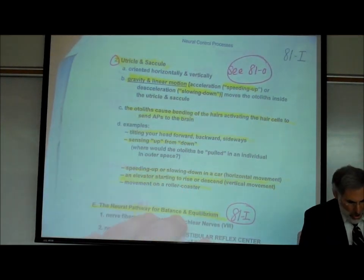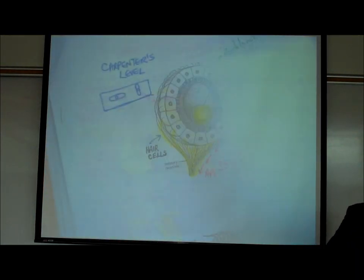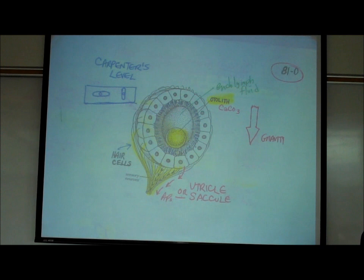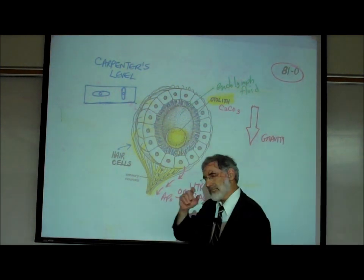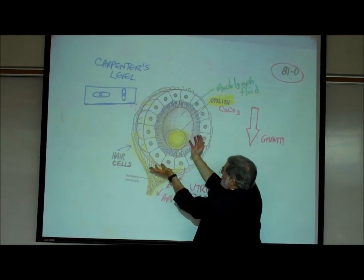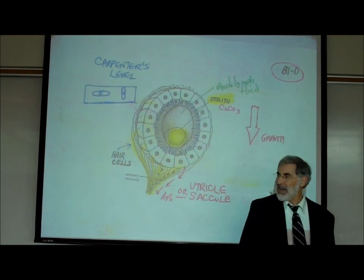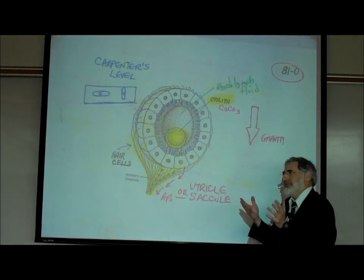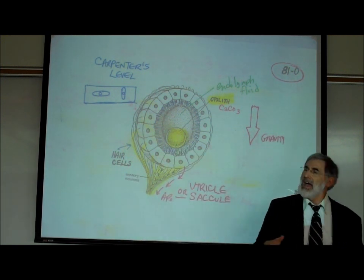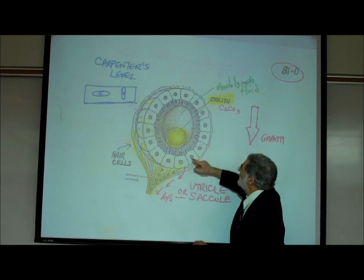On page 81O, this is what a utricle and saccule basically look like — like a little sac made up of cells. These cells have hair cells again. We had hair cells for the cochlea for hearing, hair cells for the semicircular canals for rotational movement, and now hair cells for this as well. This cavity is filled with fluid — endolymph — just as we had endolymph in the cochlear canal and in the semicircular canals.